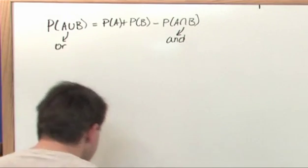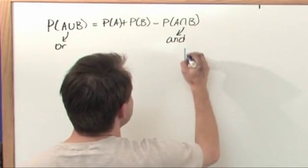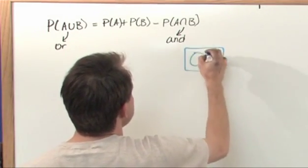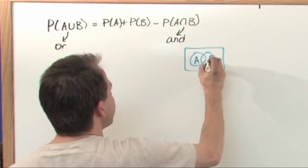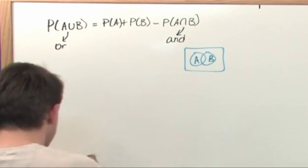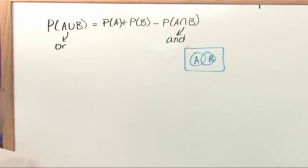So we were drawing Venn diagrams in the last section with A and B and there was a little intersected region, but what we were trying to find was the A or B, so the whole thing shaded all the way across. That's what we were trying to find and that's what that thing actually calculates.